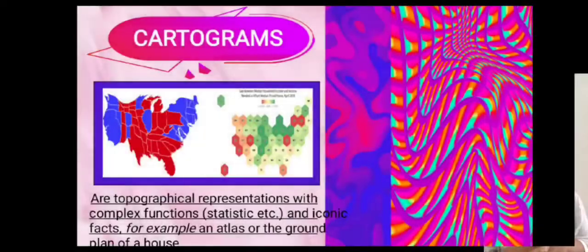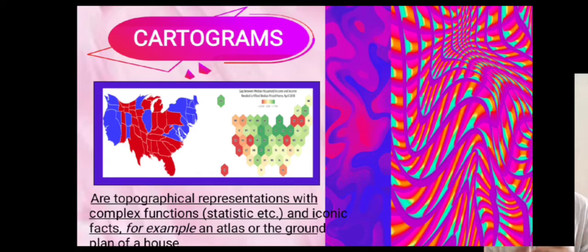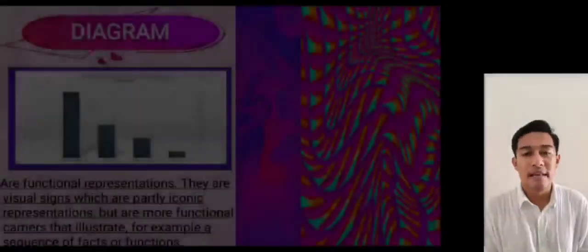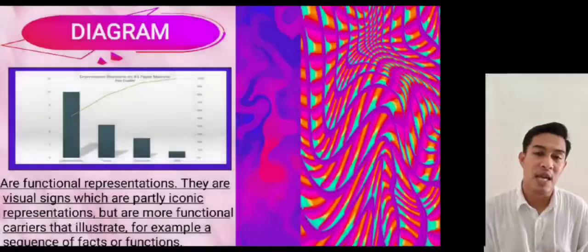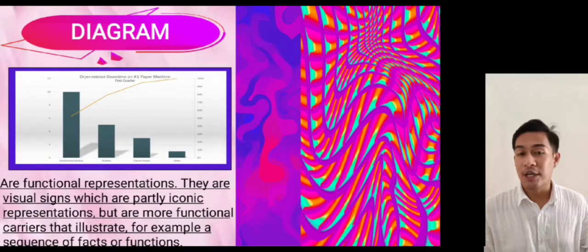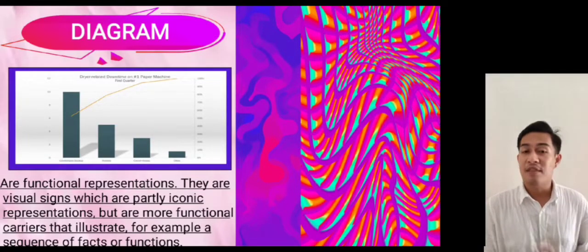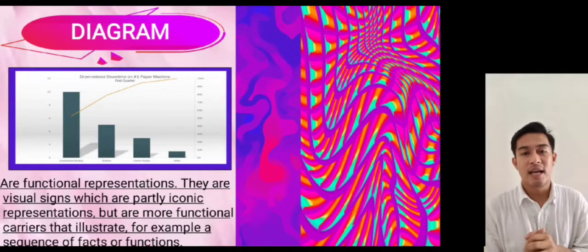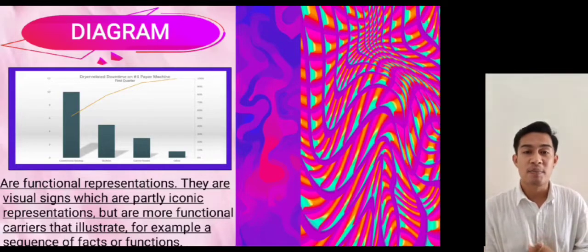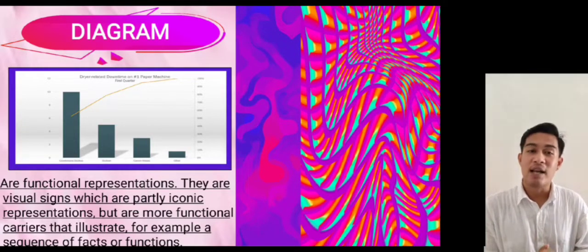Third, cartograms. Cartograms are topographical representations with complex functions like statistics and iconic facts — for example, an atlas or the ground plan of a house. A cartogram, also called an anamorphic map, features the geographic size of a country or province. Fourth, diagrams. Diagrams are functional representations — visual signs which are partly iconic but serve more as functional carriers that illustrate a sequence of facts or functions. An example is a pie chart, which shows arrangements and relations of subject matter for mathematical or scientific purposes.